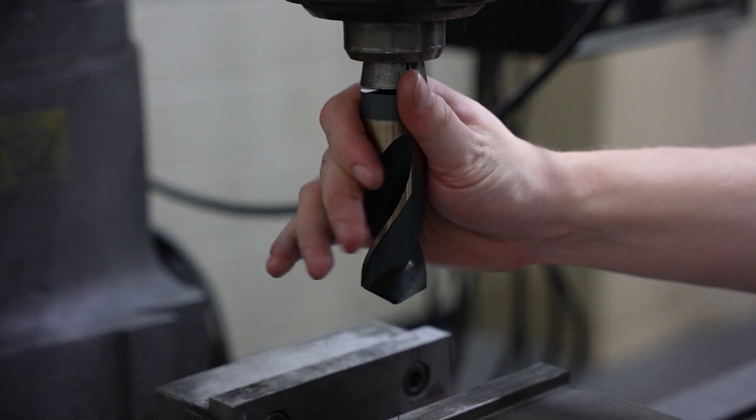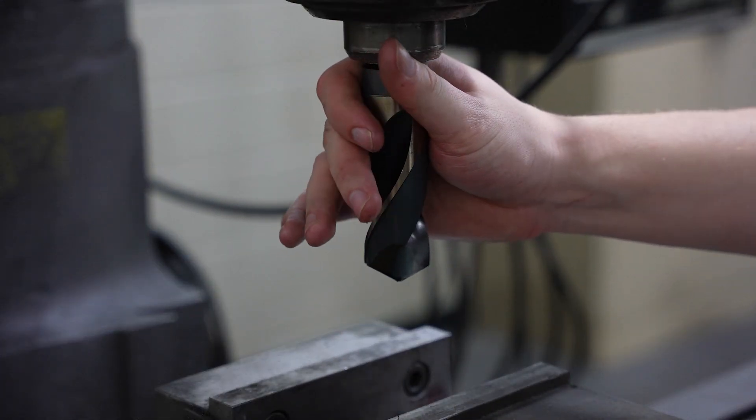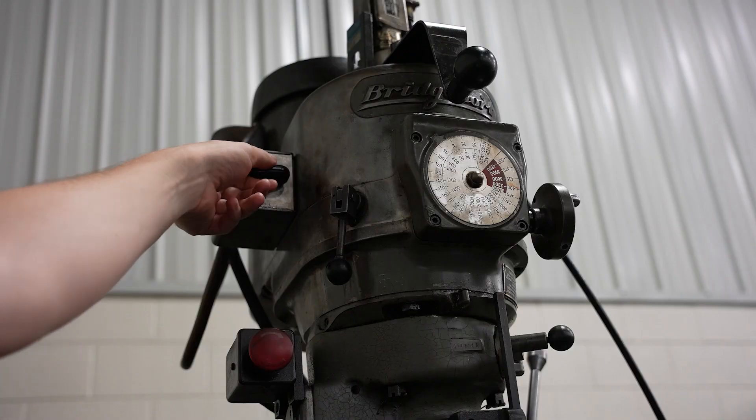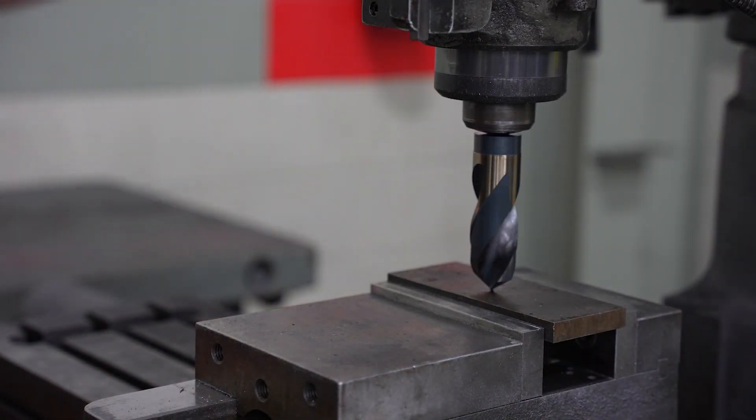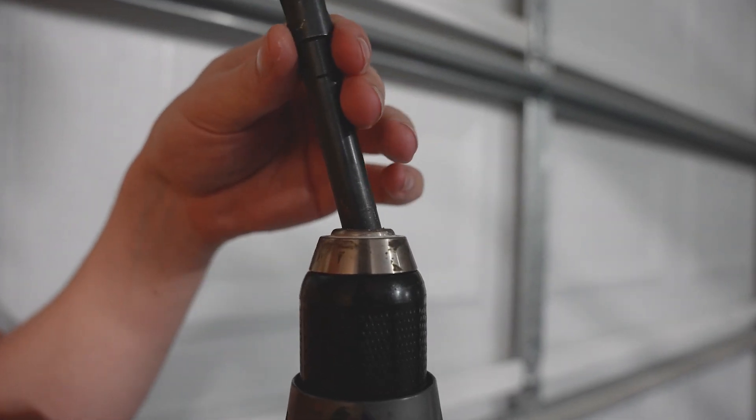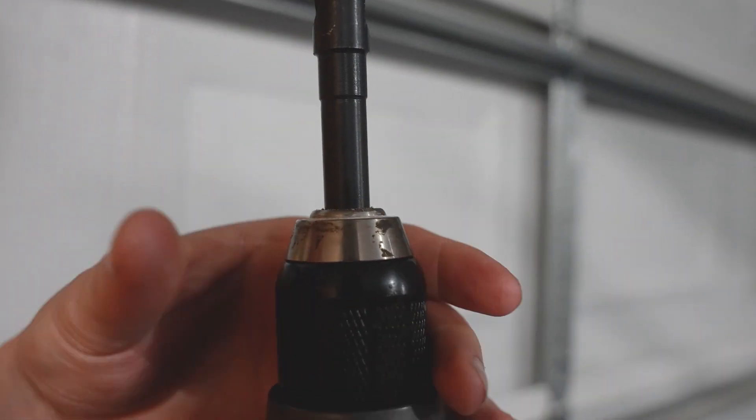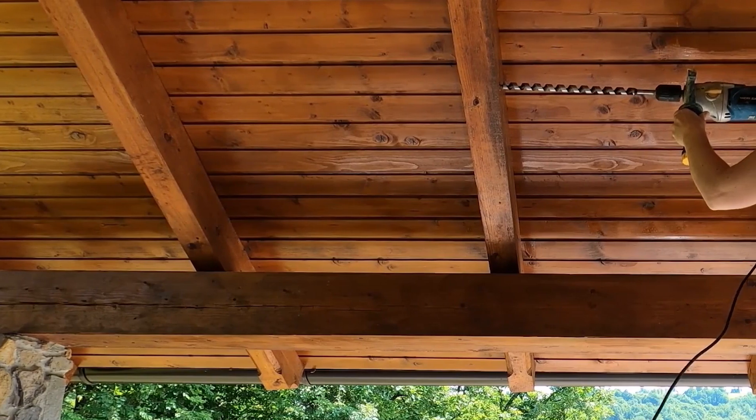Many tools over a half inch have a reduced shank. These go by different names like silver and Deming drills or Prentice drills. The small shank lets you hold the tools in a drill chuck which helps you produce large holes where heavy equipment can't go.